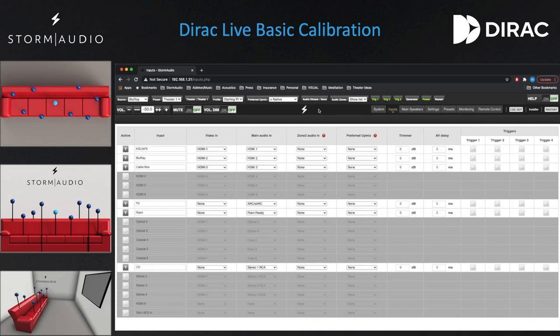In this video, we will show you how to perform a basic Dirac Live calibration. During the calibration, the Dirac Live tool has control over the ISP. Therefore, in order to prevent interfering with other Storm Audio processors on the network, the ISP and theater or zone you wish to calibrate will have to be put into Dirac mode.